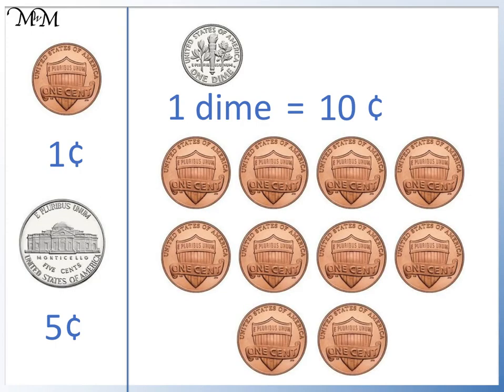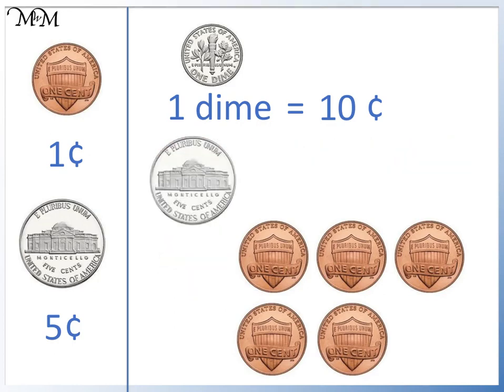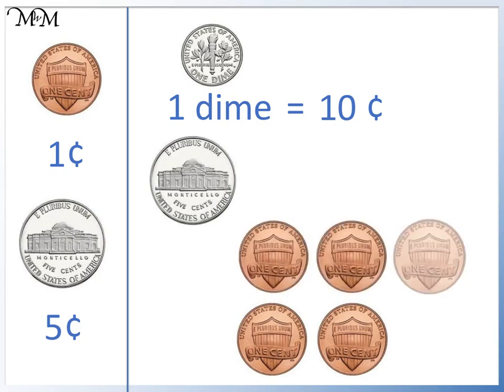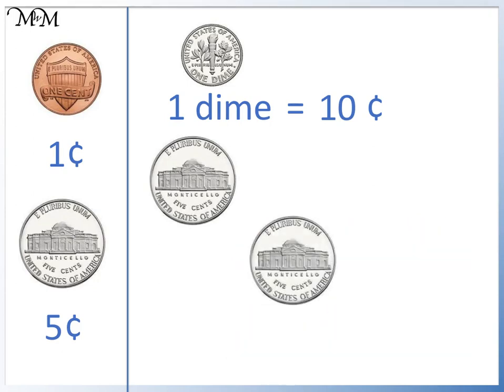We can swap these five one cent coins for a five cent coin. And we can swap these one cent coins for a five cent coin. So one dime is the same as two nickels.